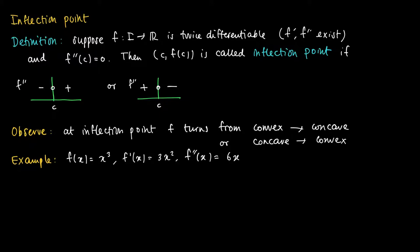So we not only see that 0 is a stationary point, but it's also a zero of the second order derivative.